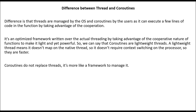A lightweight thread means it doesn't map onto your native thread, so it doesn't require context switching on the processor, which means they are faster. Coroutines do not replace threads — they are just a framework to manage your threads more efficiently. You don't have to do context switching like with threads, where context switching depends on your processor and can be a bit expensive.